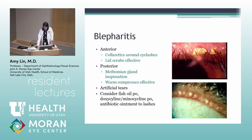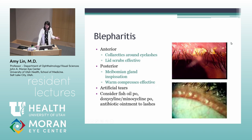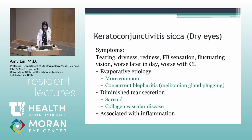Moving on to chronic diseases — blepharitis has anterior and posterior types. With anterior, you'll see collarettes around the eyelashes, and lid scrubs are very effective. With posterior blepharitis, you'll see meibomian gland inspissation or blockage, and warm compresses are effective. Additional treatments include artificial tears, oral fish oil, oral doxycycline or minocycline, and antibiotic ointment to the lashes. Dry eye often has concurrent blepharitis or meibomian gland dysfunction; symptoms include tearing, dryness, redness, foreign body sensation, and fluctuating vision during the day.